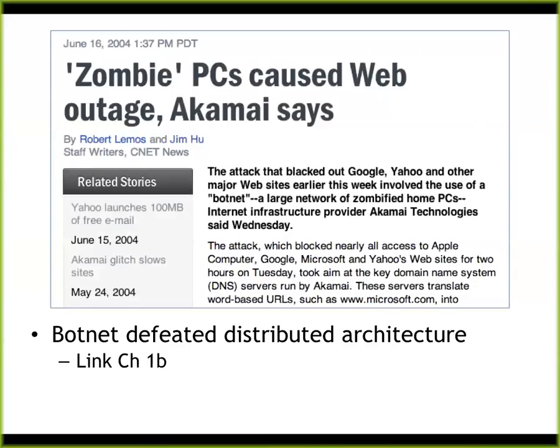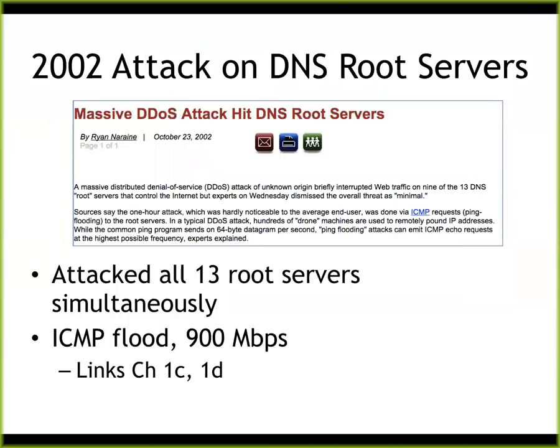In 2004, a botnet caused another outage with a lot of zombie PCs. This was one of the first big distributed denial-of-service attacks where it took over a large number of random machines, and they all attacked at once from many locations, so that even attempts to filter it by blocking bad IP addresses wouldn't work very well. Then there's the crown jewel — if you could take down the root DNS servers, they said you would take down the whole internet. People have tried this several times. No one has ever succeeded.